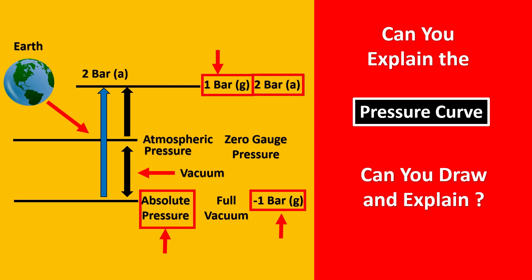So if you try to compare and put it side by side, you would realize that 1 bar gauge is basically nothing but 2 bar absolute. So if you draw this diagram explaining atmospheric pressure, gauge pressure, full vacuum, the interview would be quite impressed and would be sure that you are very clear with these concepts.